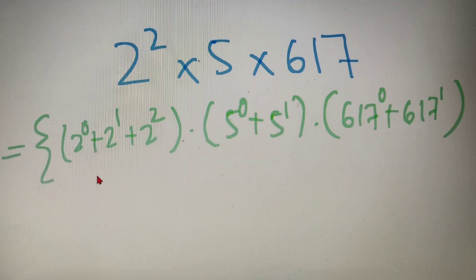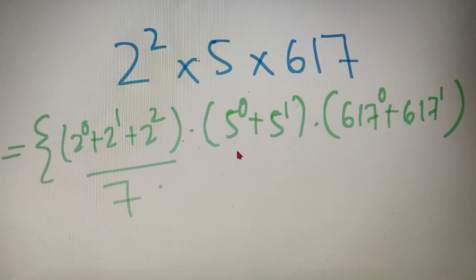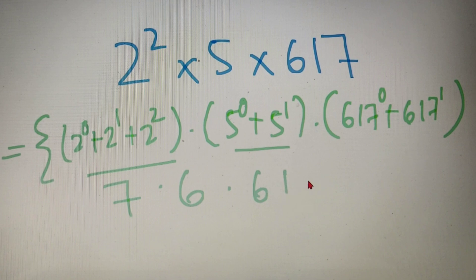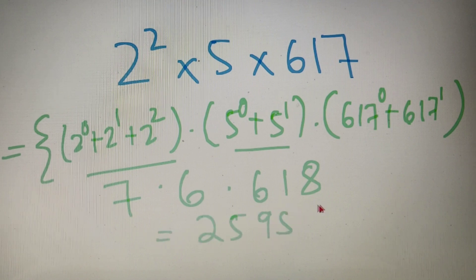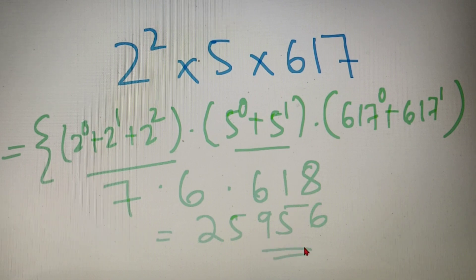Now the sum of the first part is equal to 7, the second part is equal to 6, and the third part is equal to 618. So the sum of factors of the number is the product of these three numbers, which is equal to 25956. So the sum of factors of 12340 is equal to 25956.